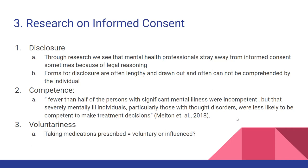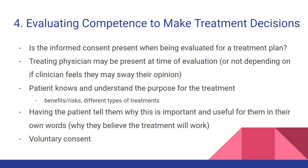The fourth component is evaluating competence to make treatment decisions. Is informed consent present when being evaluated for treatment? Is consent actually given at the time the clinician is evaluating the future treatment plan? Treating physicians may or may not be present at the time of evaluation, depending on whether the psychiatric clinician feels they may sway the patient's opinion. The patient should know and understand the purpose of their treatment, its benefits, risks, different types of treatments, and possible benefits and risks of those alternatives. Having the patient explain in their own words why the treatment is important and useful, why it might or might not work, being fully engaged with the reasoning behind it — and obviously, voluntary consent.